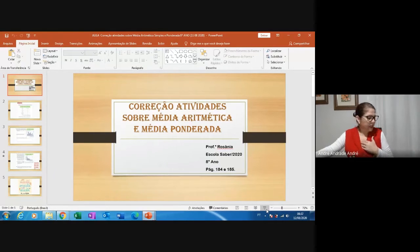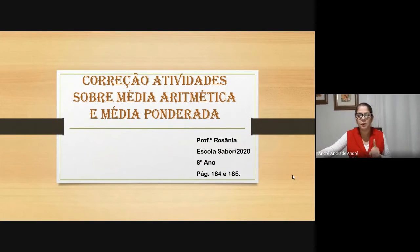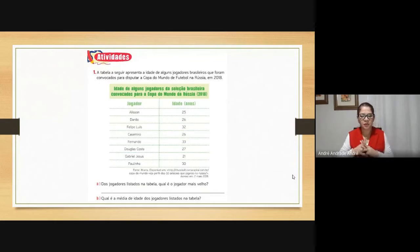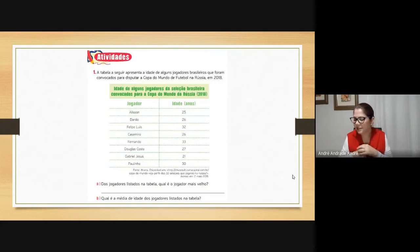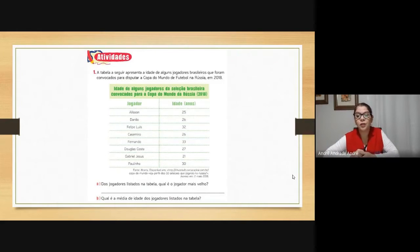Então, pessoal, nós vamos fazer a correção das páginas 184 e 185, sobre média aritmética simples e média aritmética ponderal. Vocês tiveram alguma dificuldade para fazer as atividades? Quem fez? A tabela a seguir apresenta a idade de alguns jogadores brasileiros que foram convocados para disputar a Copa do Mundo de Futebol na Rússia em 2018.